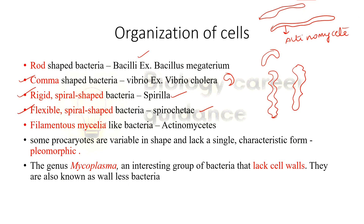We also have bacteria forming mycelia — these are called actinomycetes. If there is any bacteria with no constant shape, it is called pleomorphic. Pleomorphic bacteria have no fixed shape. We also call them wall-less bacteria — we call them mycoplasma. Wall-less bacteria are mycoplasmas. This is very, very important.